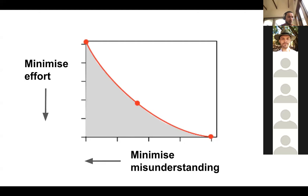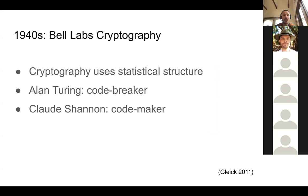However, you can't just make everything as short as possible, because you also need to distinguish a range of possible messages and limit misunderstanding by the receiver. This involves a trade-off between two fundamental principles of communication — a trade-off that will be explored in more detail later in the masterclass.